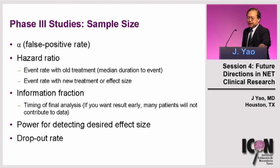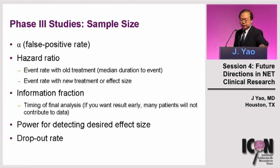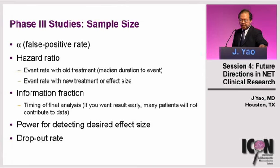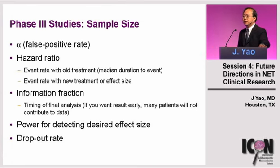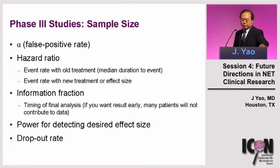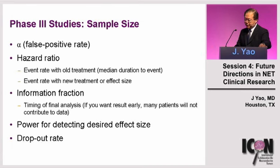Sample size of a randomized phase 3 study is determined by the total alpha error, the hazard ratio between treatments, the event rate, the clinical outcome, and the information fraction — since not every enrolled patient contributes to the data. That is why adjuvant therapy studies often require a large number of patients. Study size is also determined by the desired power, expected effect size, and dropout rate.